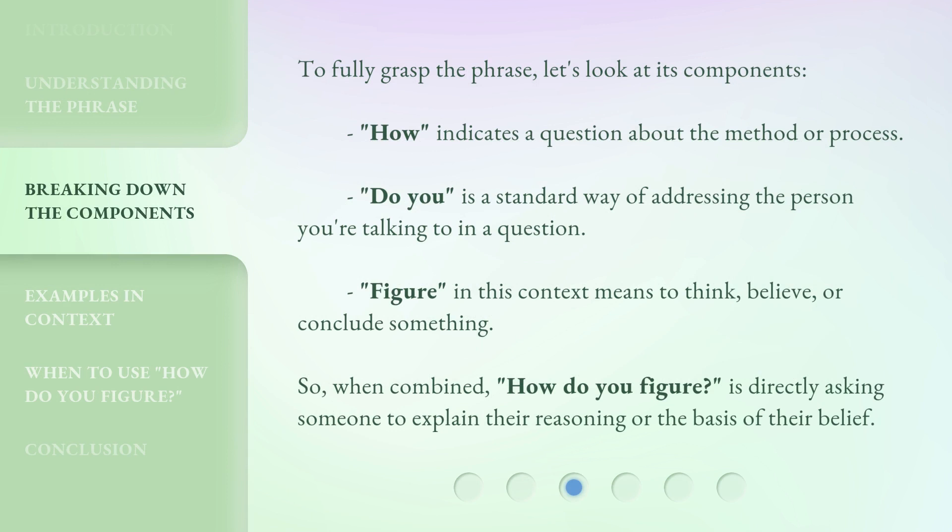To fully grasp the phrase, let's look at its components. "How" indicates a question about the method or process. "Do you" is a standard way of addressing the person you're talking to in a question. "Figure," in this context, means to think, believe, or conclude something. So when combined, "how do you figure" is directly asking someone to explain their reasoning or the basis of their belief.